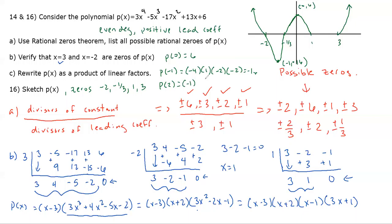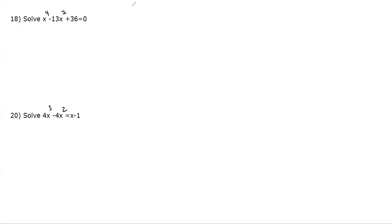We also need a point between 1 and 3. Using x = 2: (2 − 3)(2 + 2)(2 − 1)(3·2 + 1) = (−1)(4)(1)(7) = −28. So we have the point (2, −28). The graph connects these points with the appropriate end behavior.